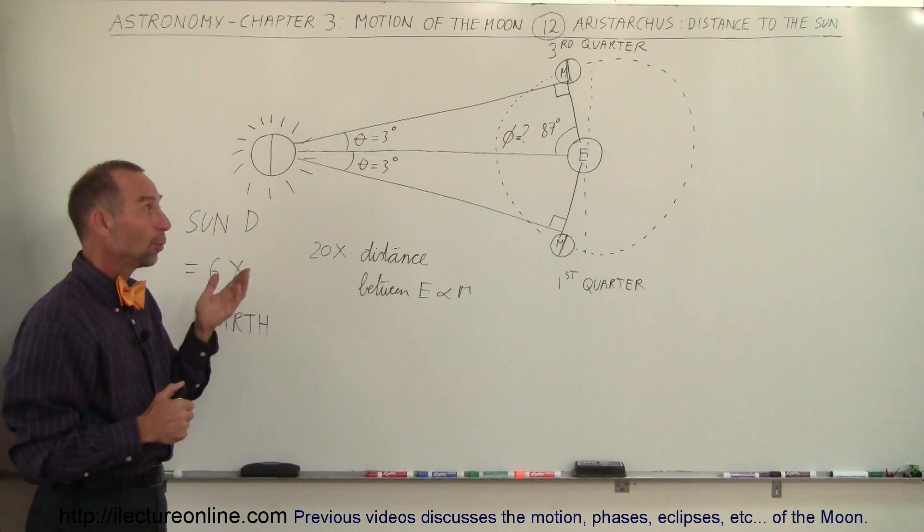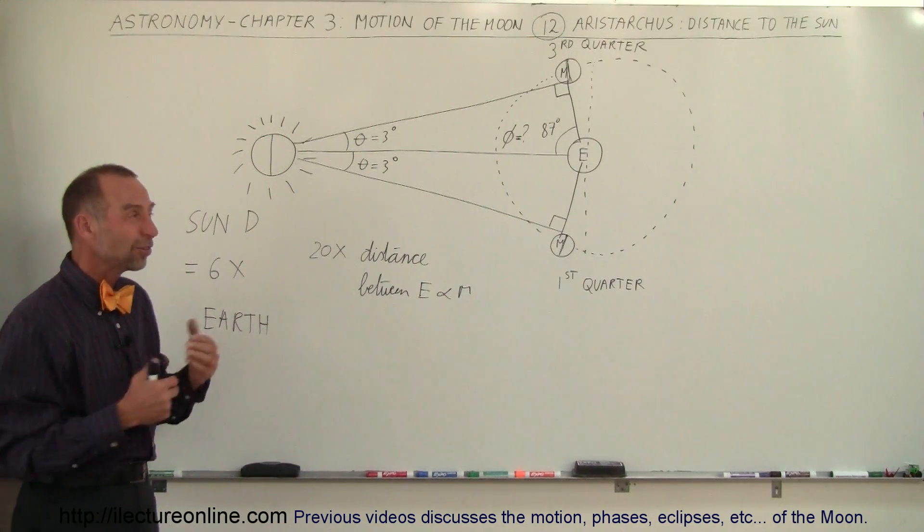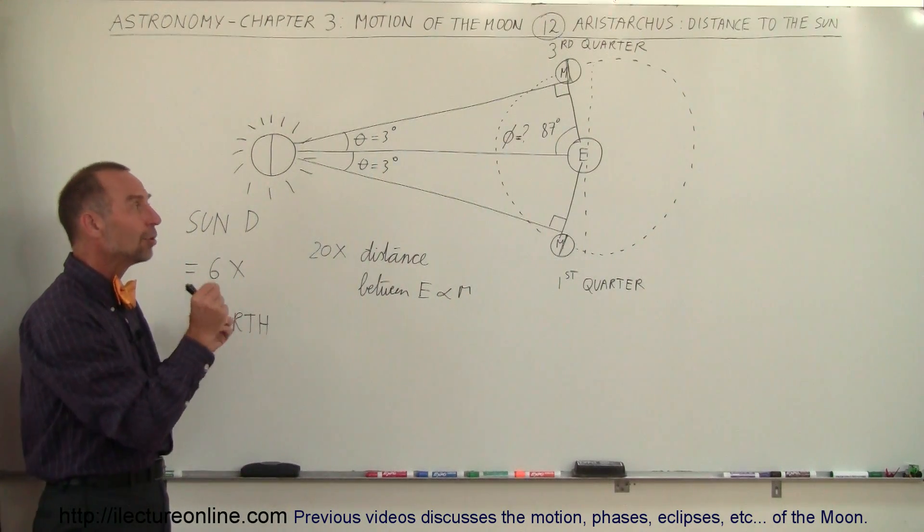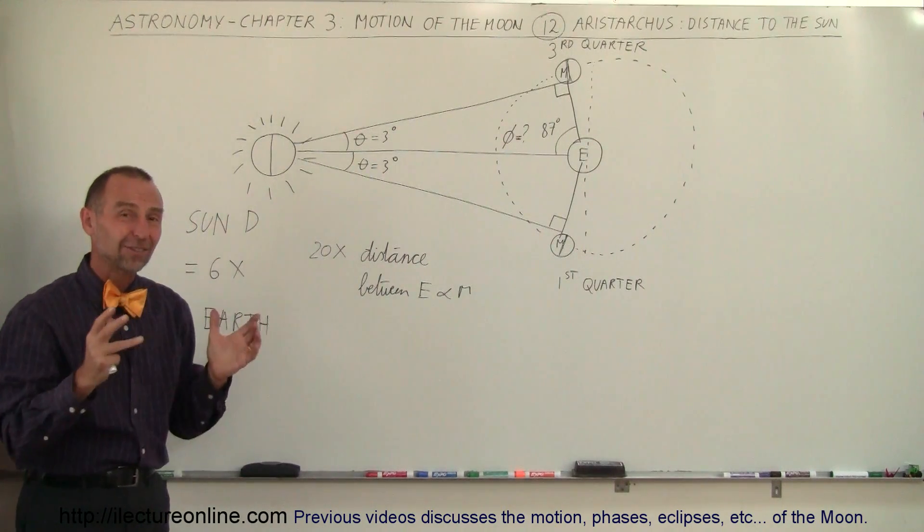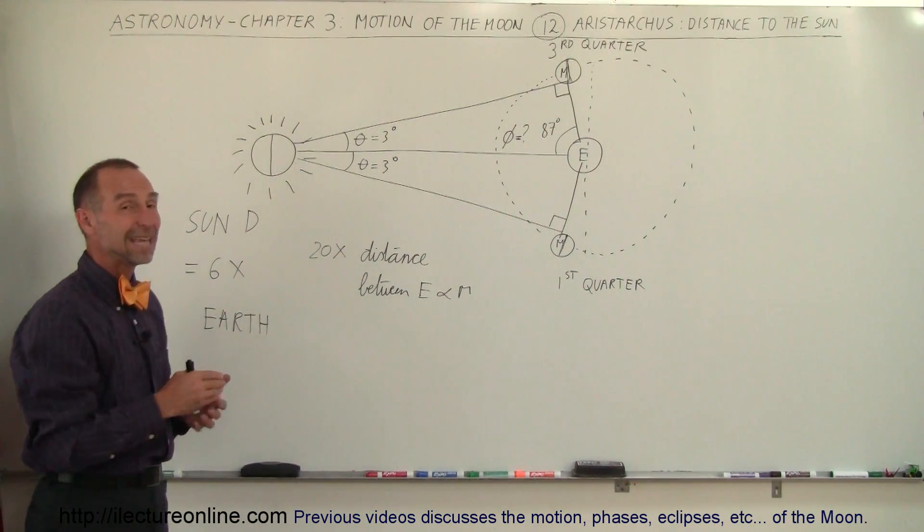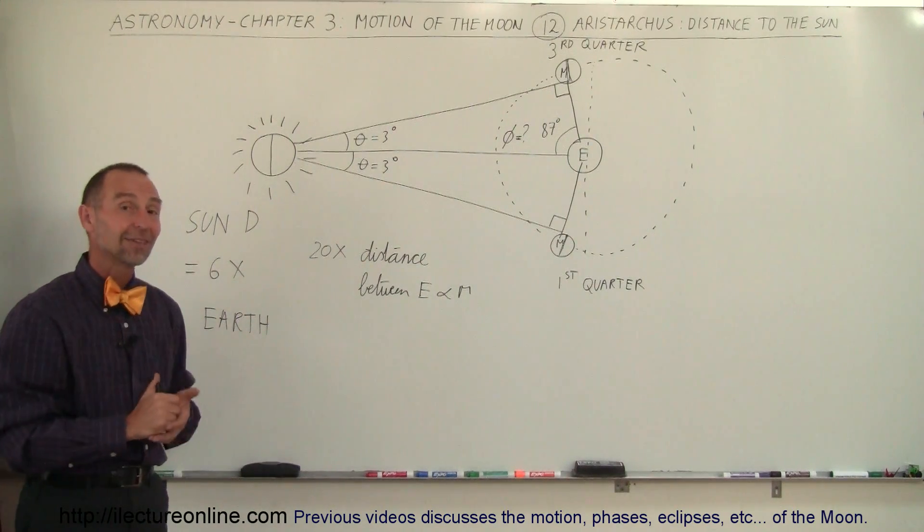Now it turns out that we didn't improve upon those measurements for almost 2,000 years. It wasn't until about the 1500-1600 time period that our ability to measure the distance to the sun and the size of the sun became better with better tools and techniques. It was almost 2,000 years before we were able to better this thing.